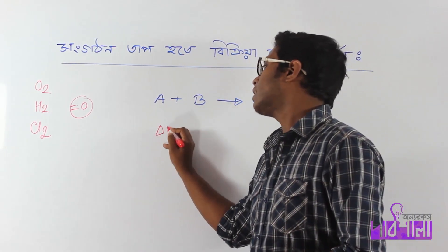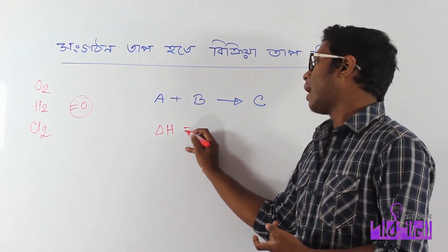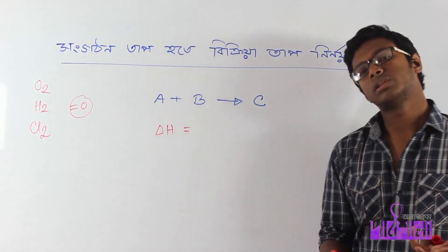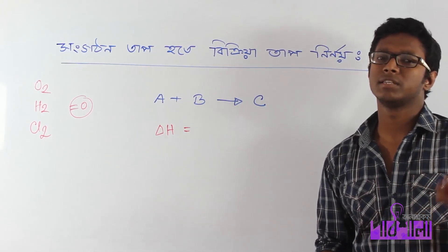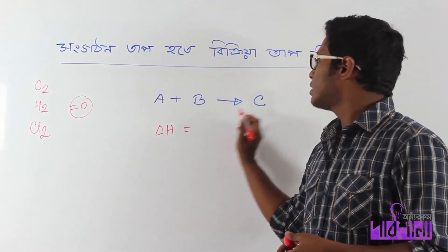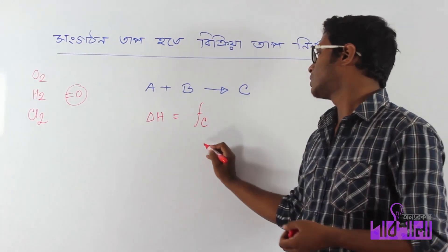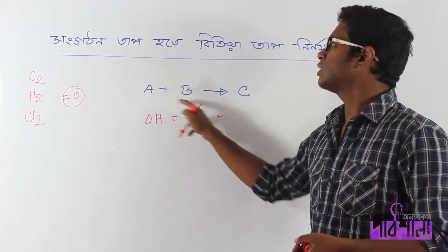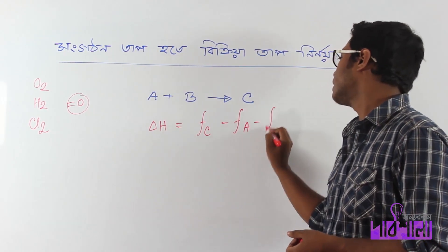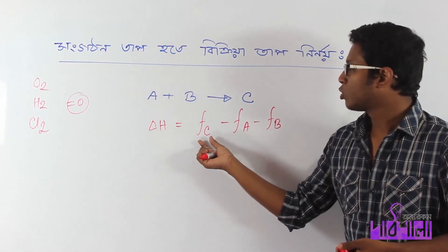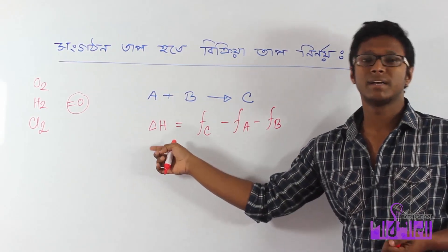Delta H is delta H of products minus delta H of reactants. Formation enthalpy of the product minus formation enthalpy of the reactant. So when we talk about C, delta H equals product formation enthalpy minus reactant formation enthalpy.